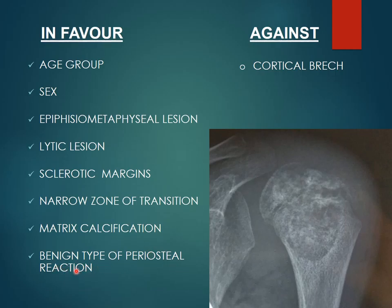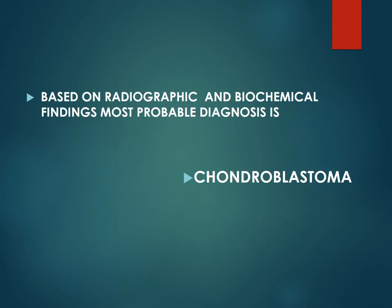A benign type of periosteal reaction is seen in chondroblastoma, and a minimal periosteal reaction is also visible in our case. The only point that goes against chondroblastoma is that there is cortical breach in our case, which is usually not present in chondroblastoma as it is a benign lesion. Based on the radiographic and biochemical findings, the most probable diagnosis is chondroblastoma.